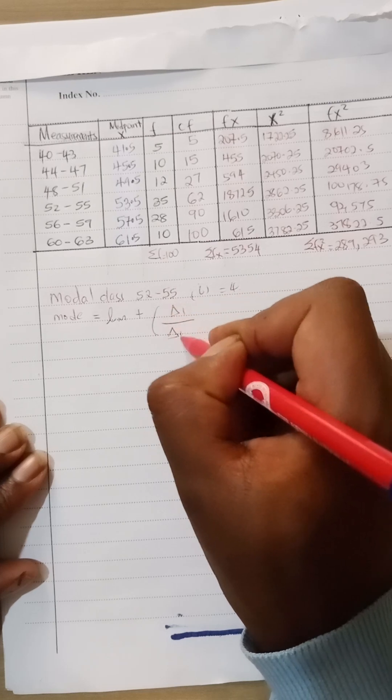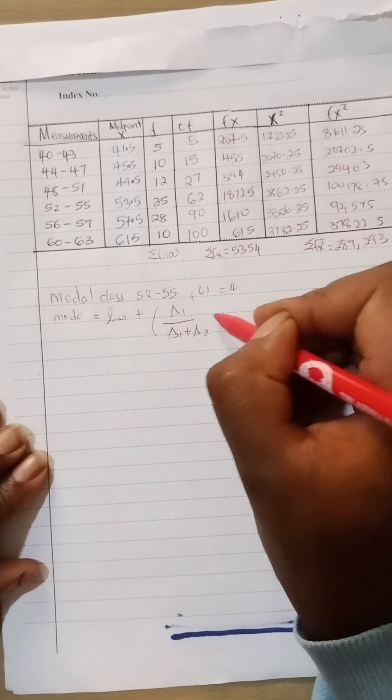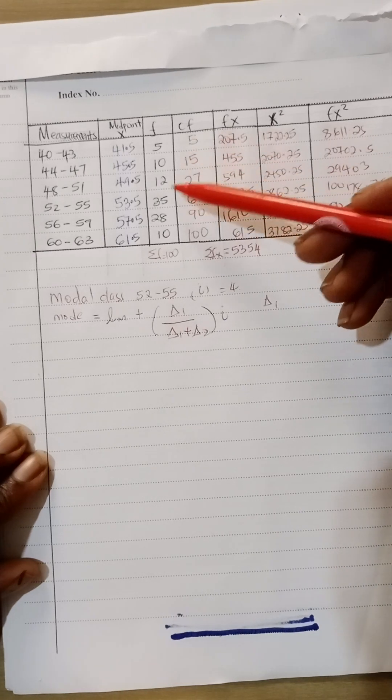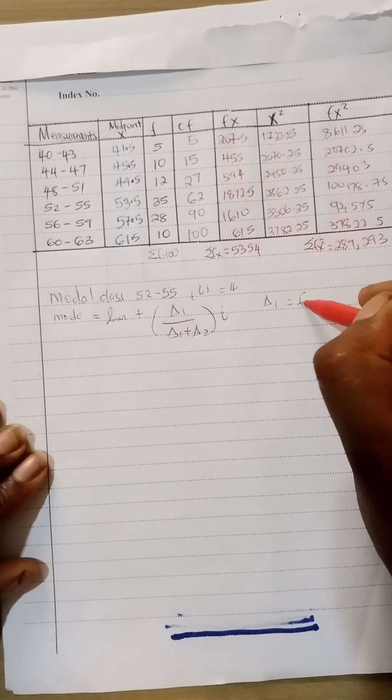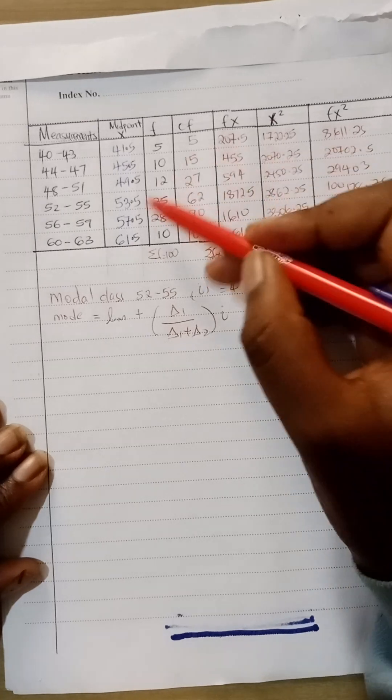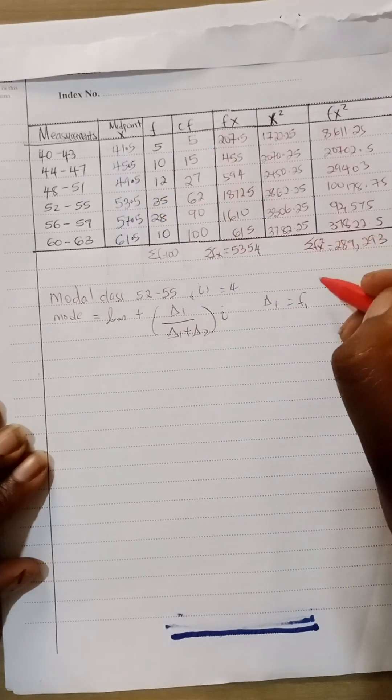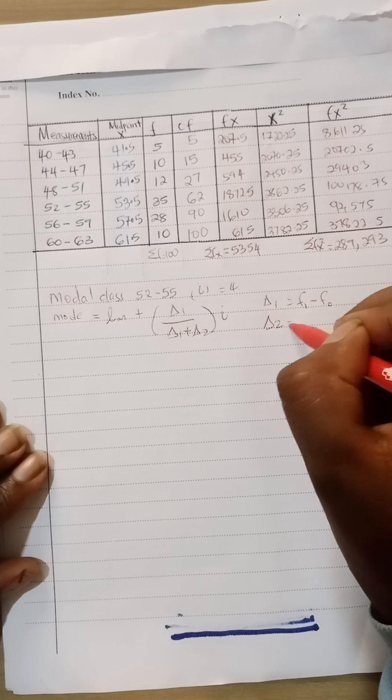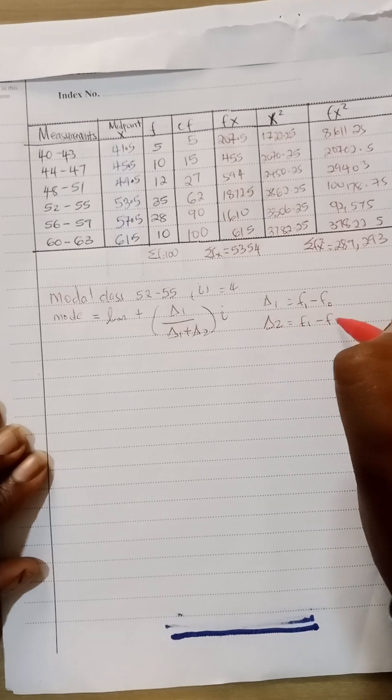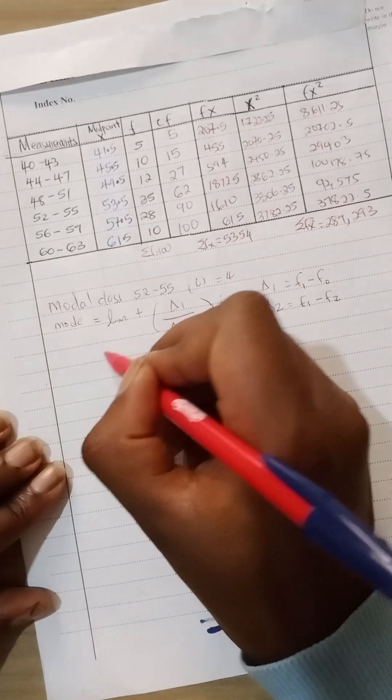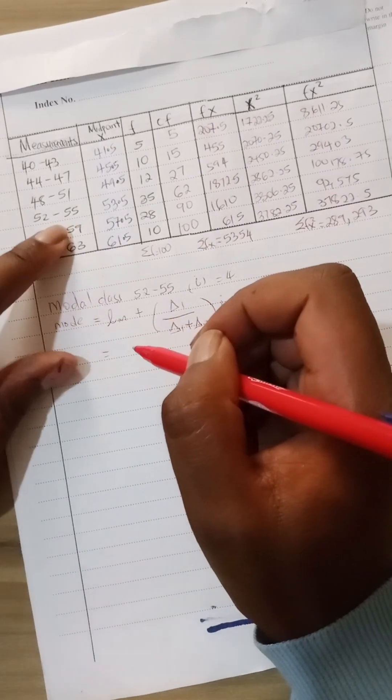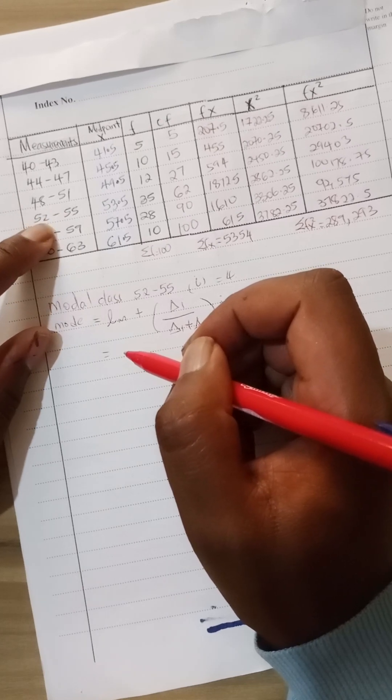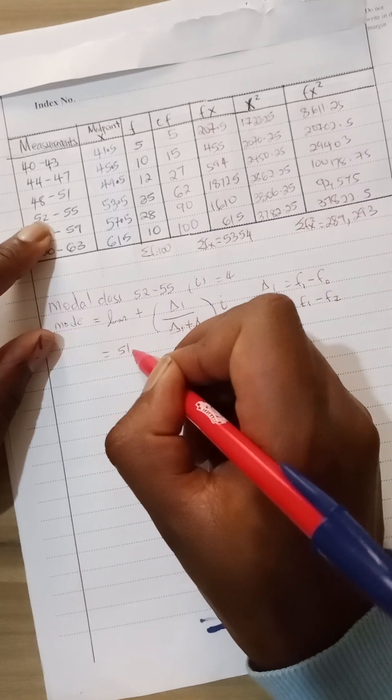Delta 1 is basically frequency in the modal class minus the frequency of the previous class which we'll call it F0. Delta 2 is the frequency of the modal class minus the next frequency which is F2. So now we continue. The lower class boundary is 52 minus 0.5, so it would be 51.5.